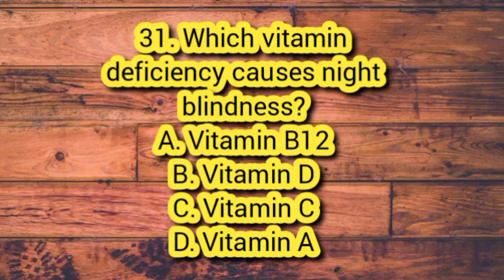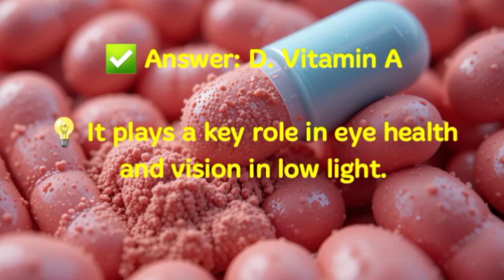Question 31. Which vitamin deficiency causes night blindness? A. Vitamin B12. B. Vitamin D. C. Vitamin C. D. Vitamin A. Answer: D. Vitamin A. It plays a key role in eye health and vision in low light.